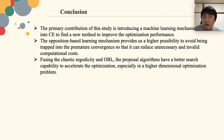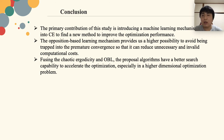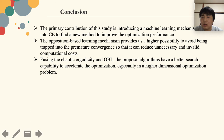The primary contribution of this study is introducing a machine learning mechanism into the conventional chaotic evolution algorithm to find a new method to improve the optimization performance. The opposition-based learning mechanism provides a higher possibility to avoid being trapped into premature convergence, thereby reducing unnecessary and invalid computational costs. Fusing the chaotic algorithm and opposition-based learning, the proposed algorithms have better search capability to accelerate the optimization, especially in higher-dimensional optimization problems.